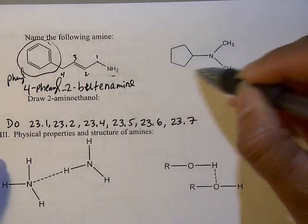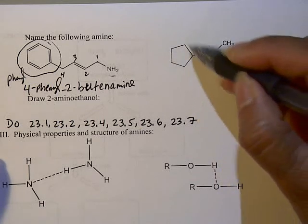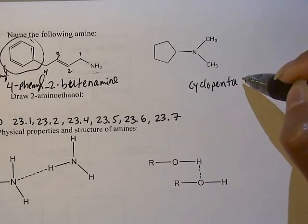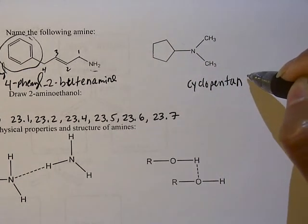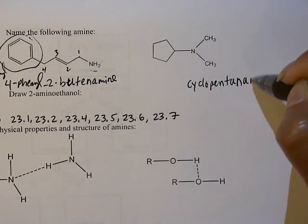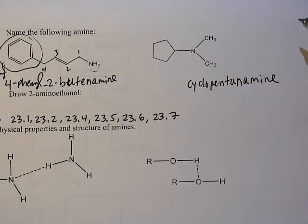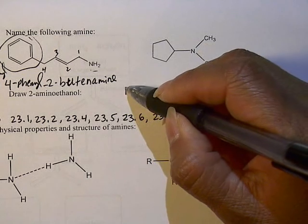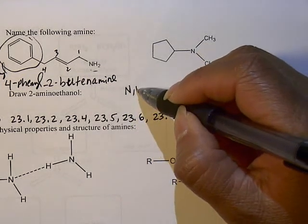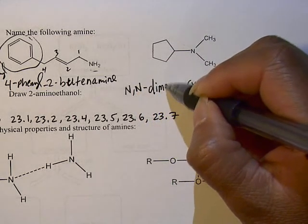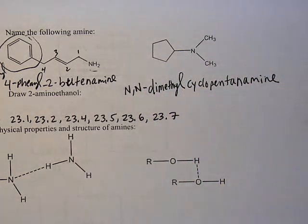So this right here would be cyclopentane. And then we'll drop the E and then add amine to it. And then on the nitrogen, we have two methyl groups. So just like how you did the amide, you're going to have N,N to indicate the two methyl groups that are on the nitrogen, and it would be N,N-dimethylcyclopentanamine.